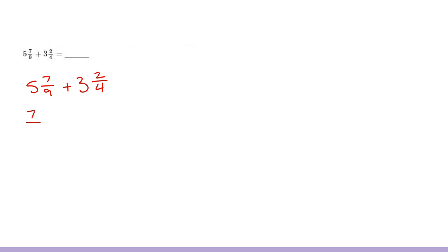If I have 7 ninths, I would multiply by 4 over 4 to get 28 thirty-sixths. If I have 2 fourths, I'm going to multiply by 9 over 9 to get 18 thirty-sixths. If I rewrite my problem, I would now have 5 and 28 thirty-sixths plus 3 and 18 thirty-sixths.